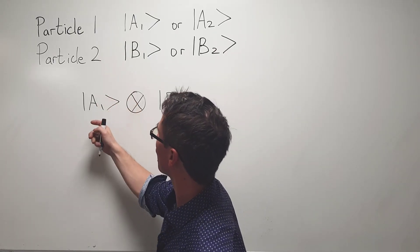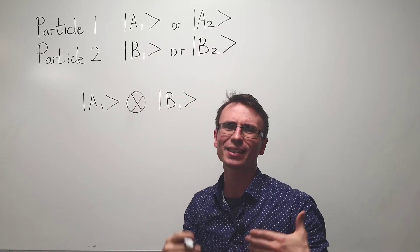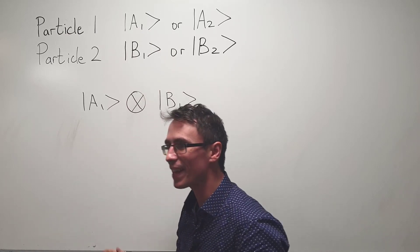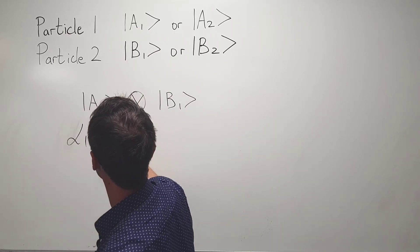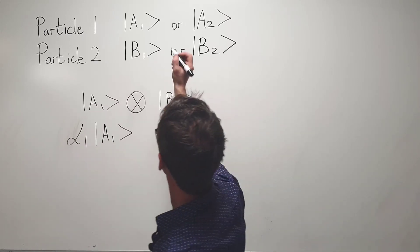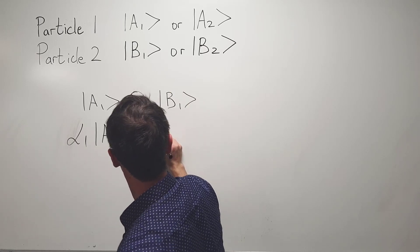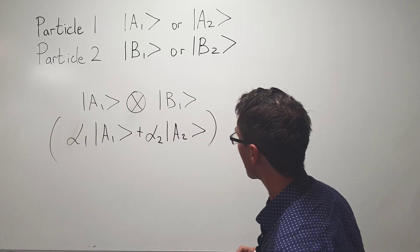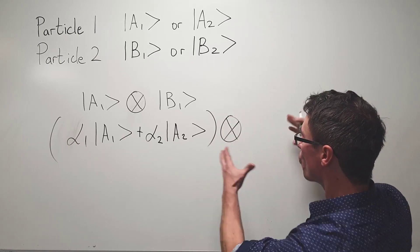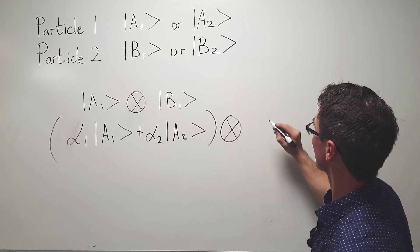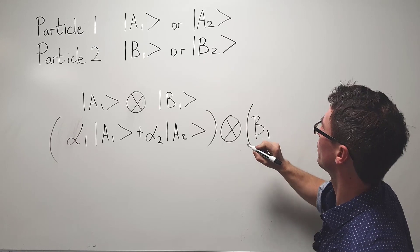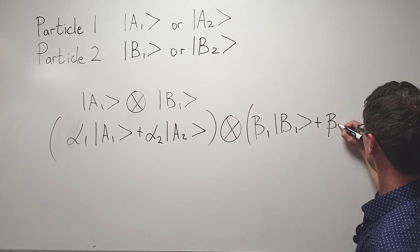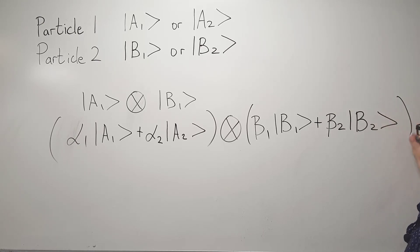In quantum mechanics though it is not a given that particle one is going to be in state a one because there will be some probability that the particle could be in state two. The way we would write this is as follows. We assign each of the states a coefficient which is directly linked to the probability of the particle being in state one, alpha one times a one, and then to that we're going to add the probability, alpha two, of being in state two. Then we can have a tensor product with the probability of particle two being in those two states. Beta one will be the probability of being in the state b one plus some coefficient beta two times the state b two.